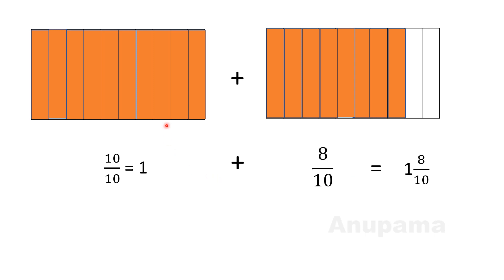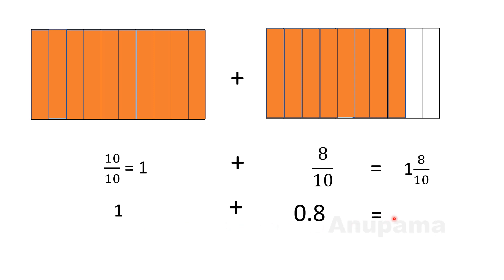We can express this mixed number in the form of decimals also. Since 1 is the whole number part, we write 1 as it is. And from previous examples we know that 8 by 10 can be written as 0.8. So 1 plus 0.8 equals 1.8. We read this as 1.8.